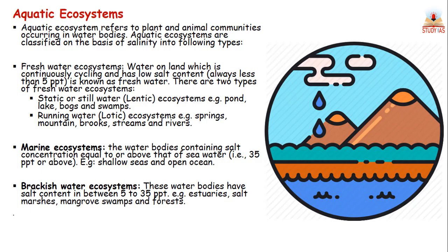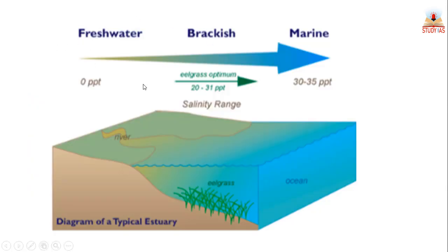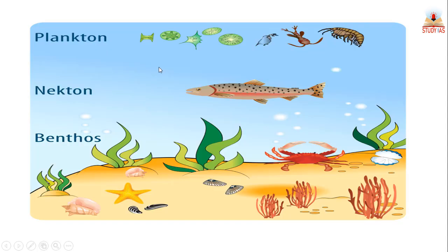Looking at a diagram of aquatic ecosystems classified on the basis of salinity range: freshwater has the least salinity, then brackish water in the middle, and marine has the highest salinity. Now, aquatic organisms are classified on the basis of their zone of occurrence and their ability to cross these zones. Organisms in aquatic ecosystems are unevenly distributed, but they can be classified on the basis of their life form and location.